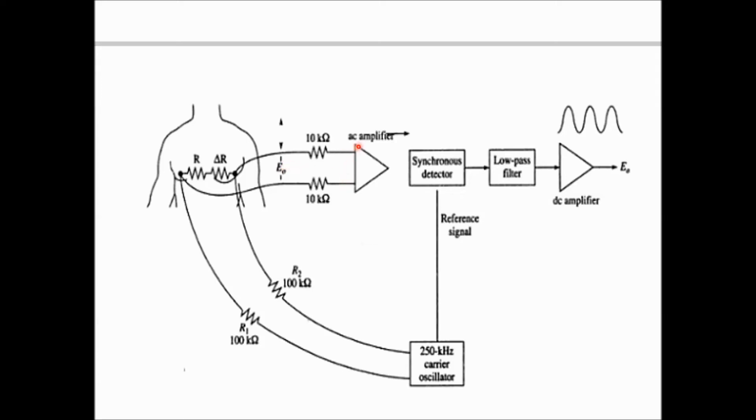The signal voltage is given into a differential AC amplifier. Amplified signal given into synchronous detector that is also known as AM detector. This separates message and carrier signal.